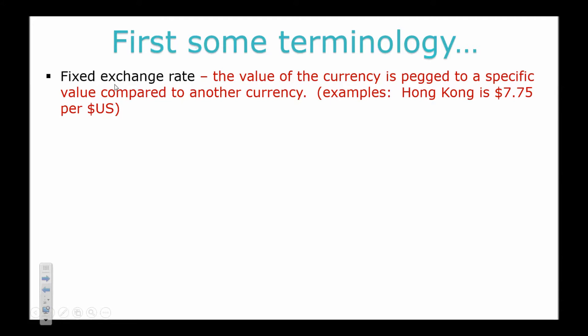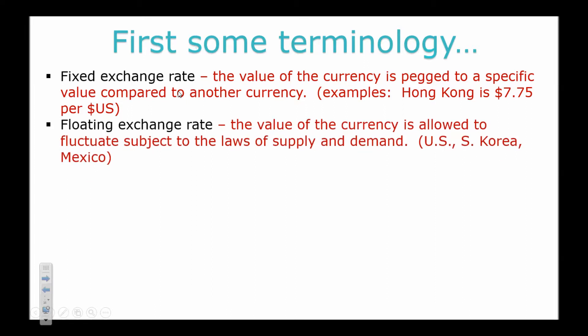There's the fixed exchange rate, which means a currency is held stable to the value of another currency. For example, the Hong Kong dollar has long been pegged so that it takes seven dollars and seventy-five cents Hong Kong to buy one US dollar. They manipulate their currency to maintain that peg. Then there's the floating exchange rate, which is what we're studying.